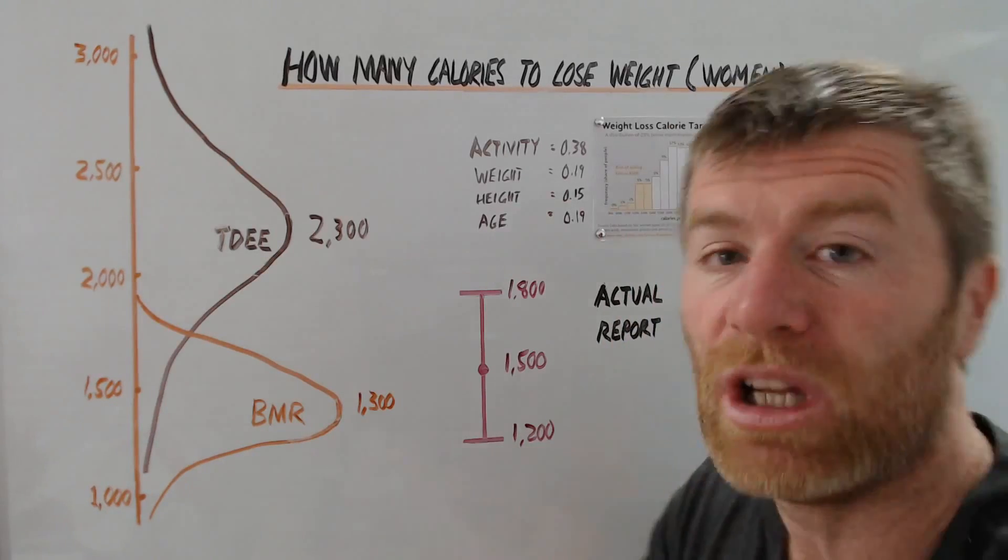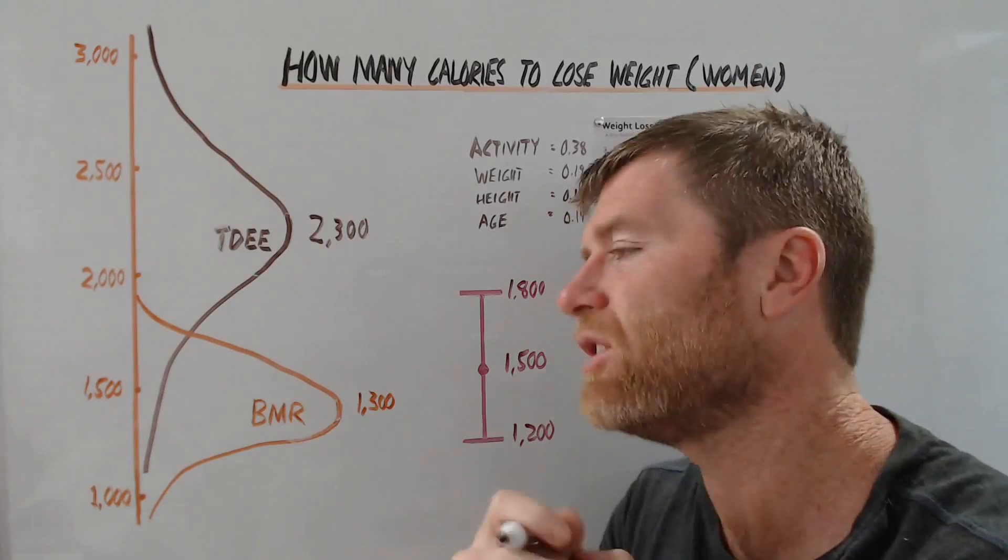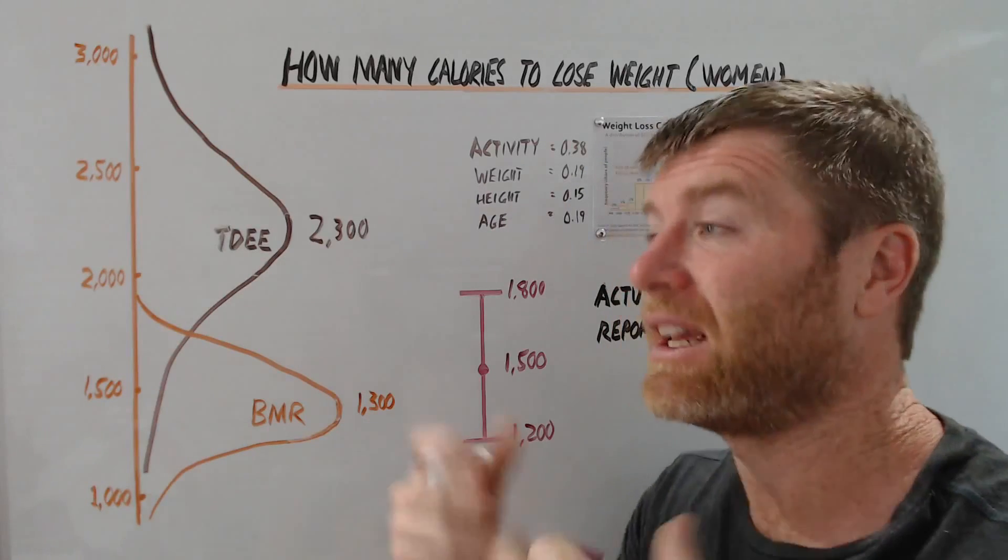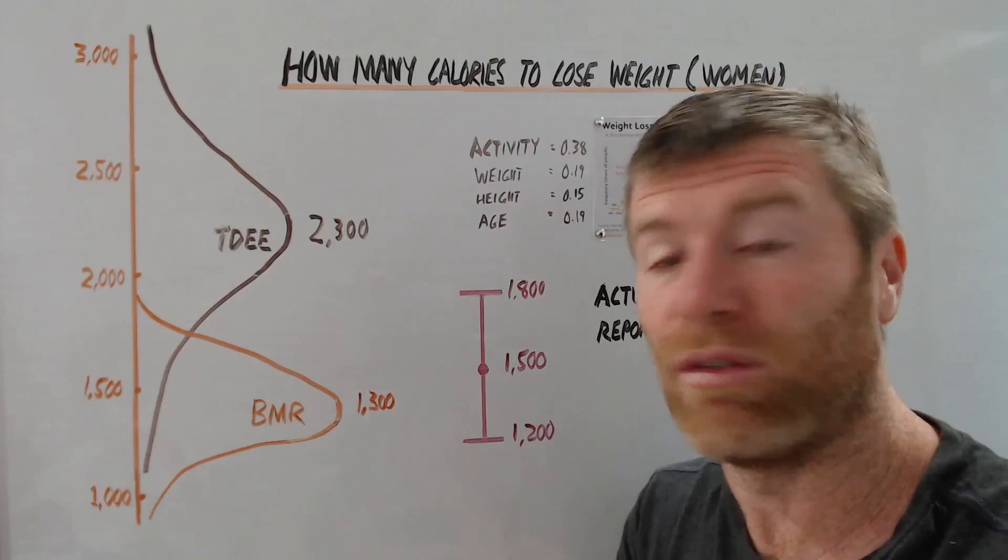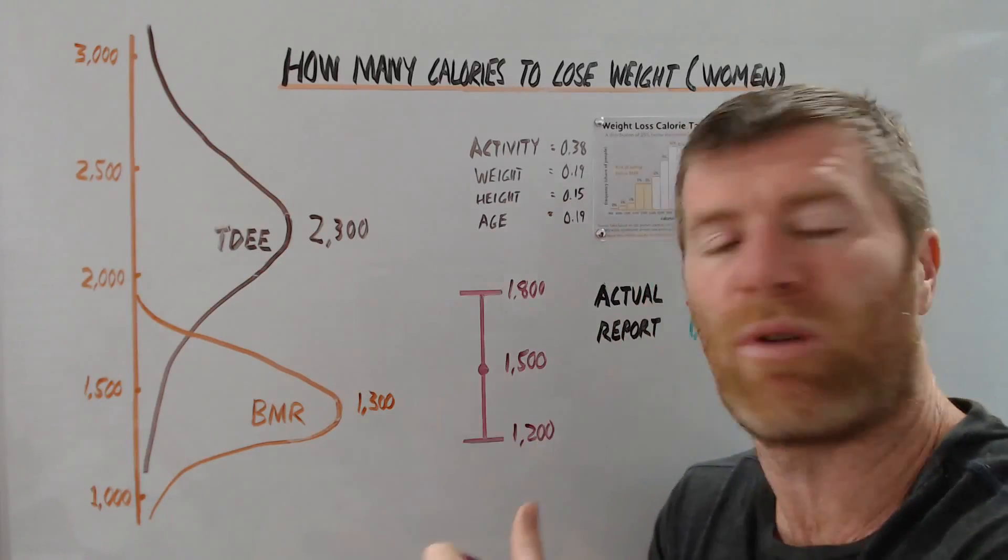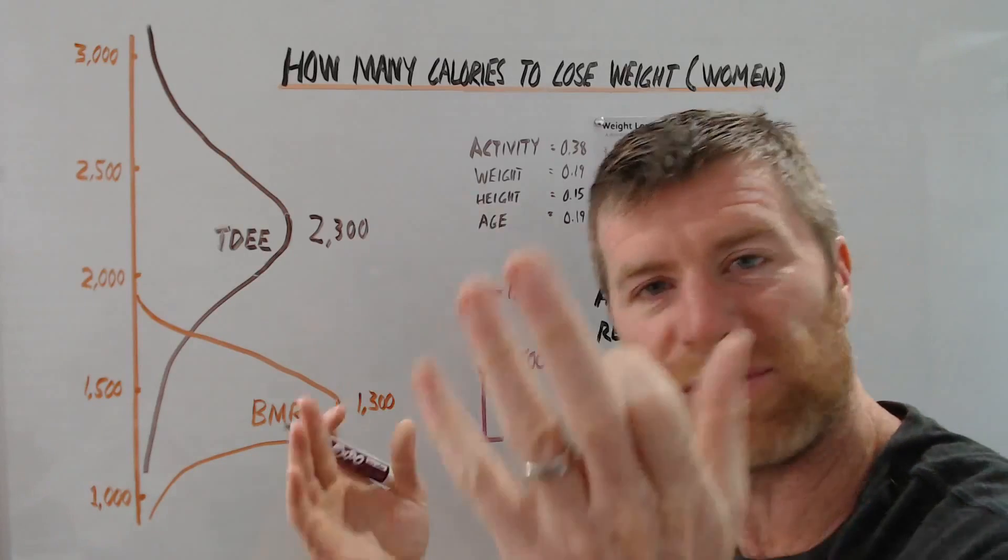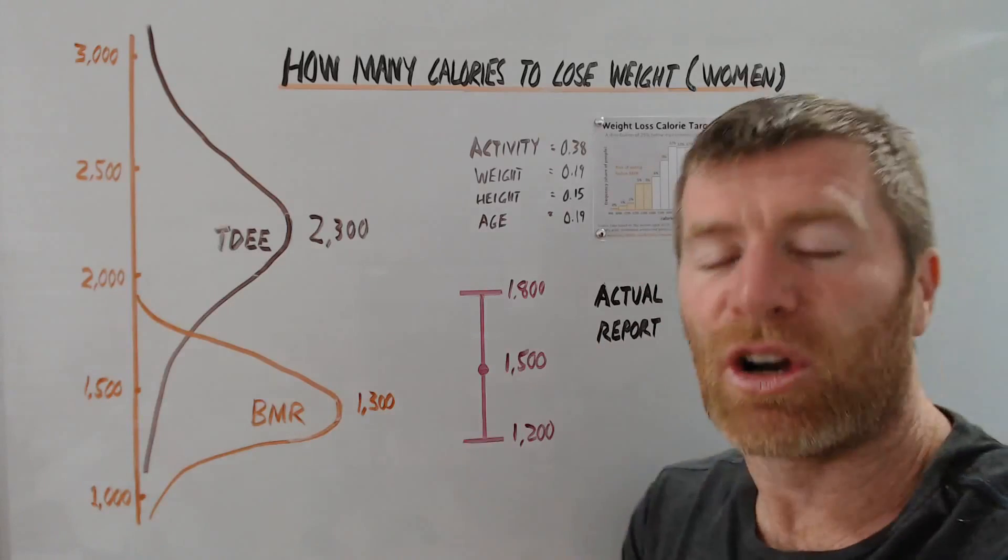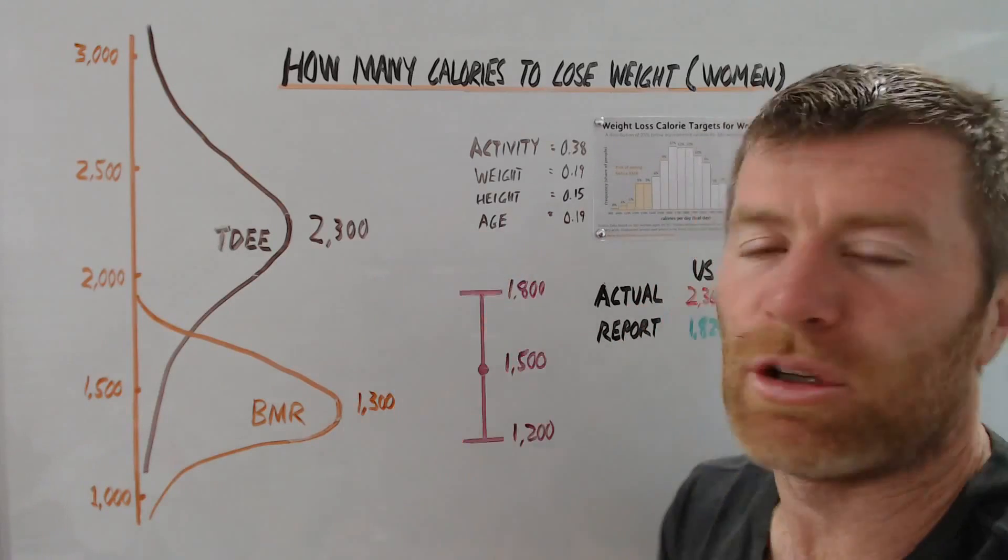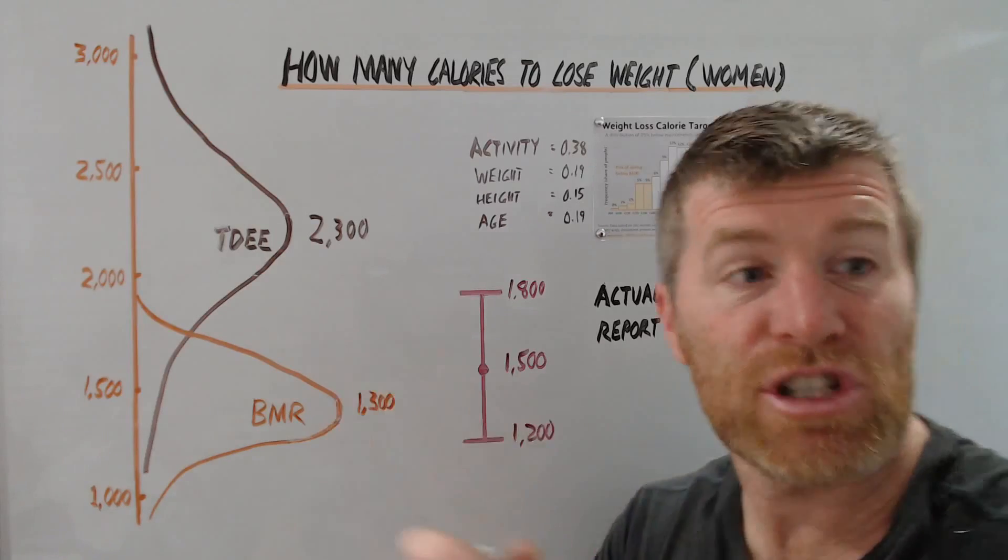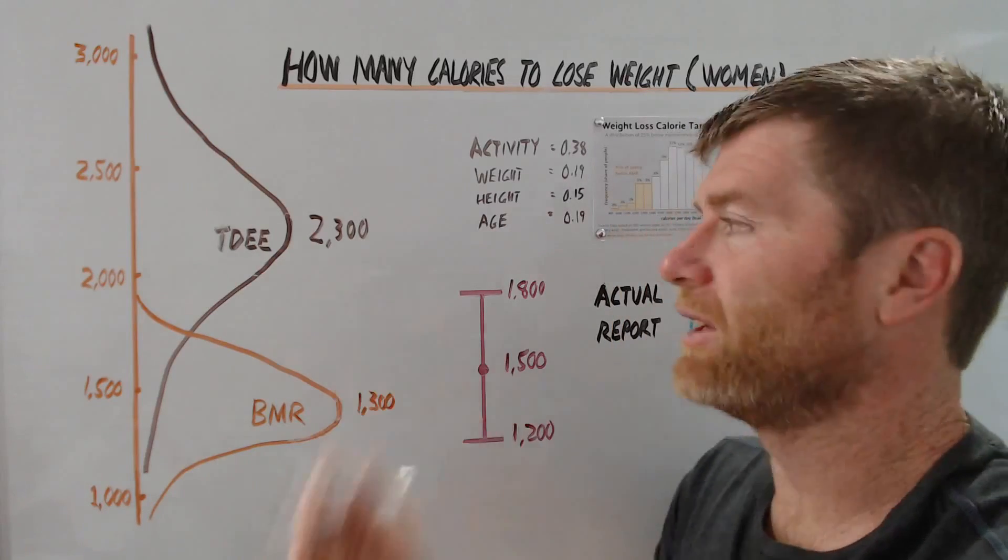But the thing is, if you're going to go low, you really need to know what you're doing. So you need to have adequate protein. You need to have your basic fat covered. And you need to be eating decent whole food because this is a very aggressive way to diet. And if you're not intelligent about it, if you just do some wacky grapefruit diet or silly shape diet or whatever, it's really not going to work out for you in the long run. You'll just yo-yo and it's not going to be great.